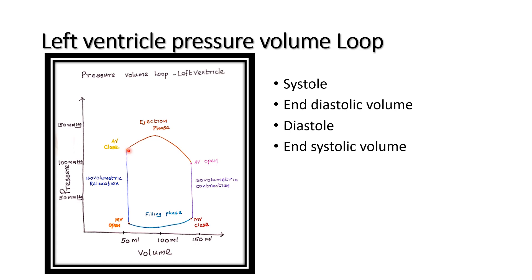Isovolumetric relaxation occurs and ventricular pressure drastically decreases. Then the mitral valve opens to fill the left ventricle. The filling phase occurs — first rapid filling, then a slow filling phase — so at end-diastole the left ventricle returns to its end-diastolic volume.